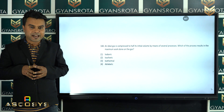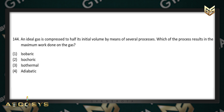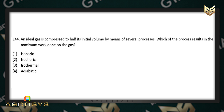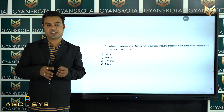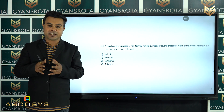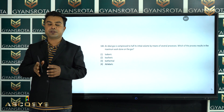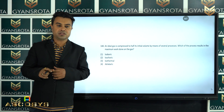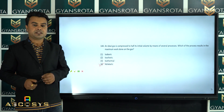Question 144: an ideal gas is compressed to half its initial volume by means of several processes. Which process results in the maximum work done on the gas? From a PV diagram, the adiabatic process gives the maximum work done on the gas. So adiabatic is the correct answer for question 144.